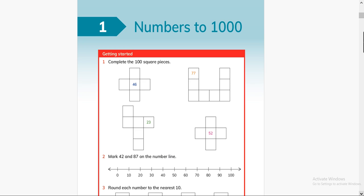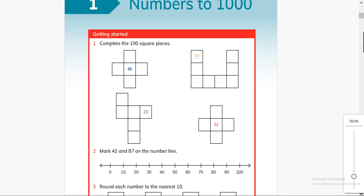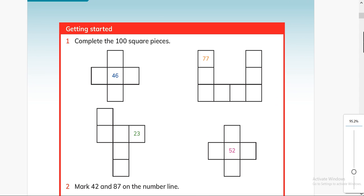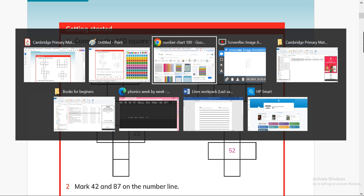This is Numbers to 1000. Complete the hundred square pieces. If you understand how hundred square grid or hundred square chart works, then this puzzle would be very easy for you.